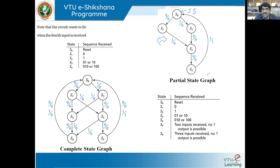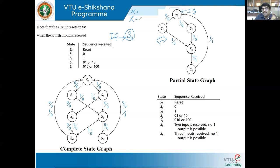We'll start from the initial state — always consider an initial state. This is the initial state S0. My input is X, and I'll be checking each bit coming with respect to X. After every four bits of input sequence, either Z becomes 1 or it remains 0. Z becomes 1 only if the sequence is 0101 or 1001 — only at the end of four bits do I get Z equal to 1; otherwise it is 0.